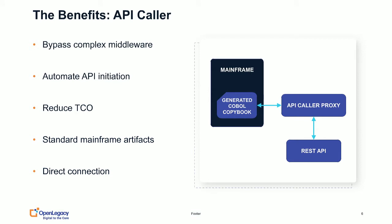In discussing the higher level benefits: you're really bypassing complex middleware, ESBs and other systems that get in the way. We have a simple translation layer. It can work passing to a queue like Kafka, which we'll discuss in a user example, or directly through to an end API as a direct connection. We automate the API initiation — everything is taken care of and generated. The mainframe only needs to integrate some COBOL code it's used to working with. That reduces the total cost of ownership because you don't have extra middleware to worry about.